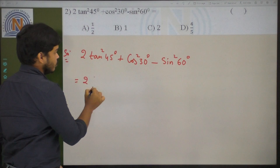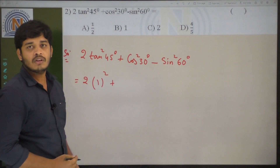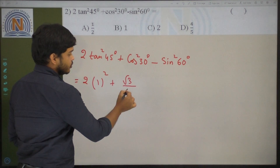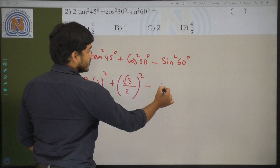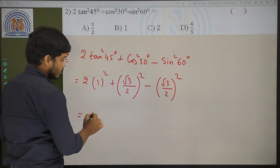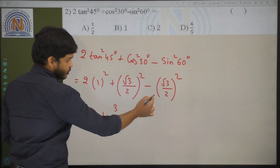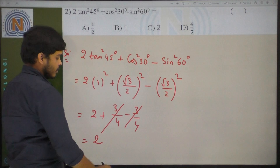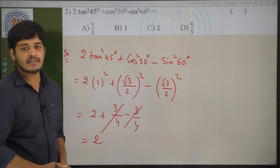So 2 into tan 45 degrees value is 1, that is 1 squared, plus cos squared 30 degrees. Cos 30 degrees value is root 3 by 2, so cos squared 30 degrees minus sin 60 degrees — sin 60 degrees value is also root 3 by 2. So 2 into 1 is 2, plus root 3 whole square value is 3, by 2 squared value is 4, minus 3 by 4. The 3 by 4 terms cancel, then the value is 2. So 2 tan 45 degrees plus cos squared 30 degrees minus sin squared 60 degrees equals 2.